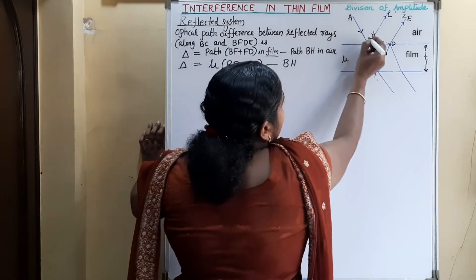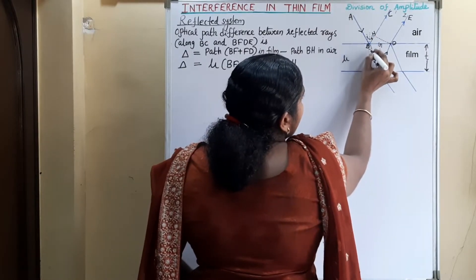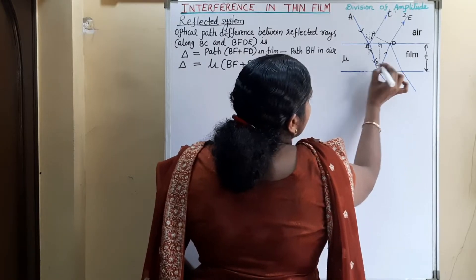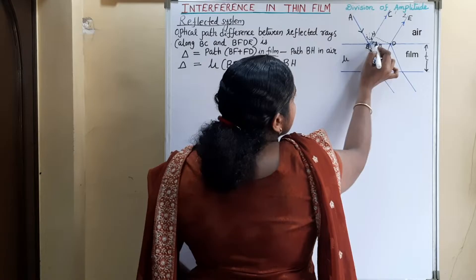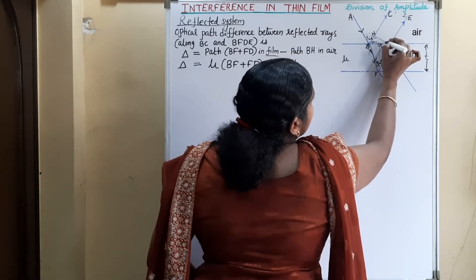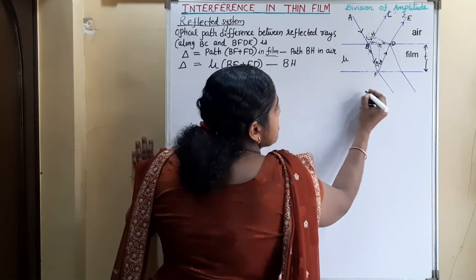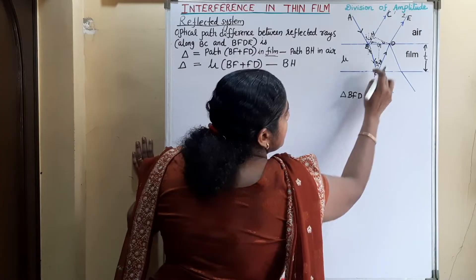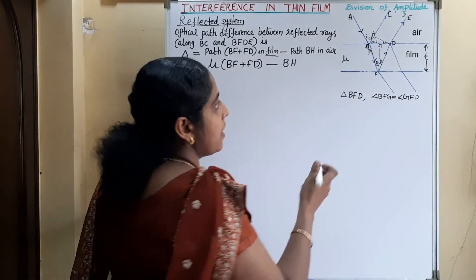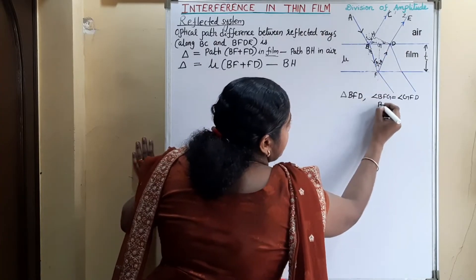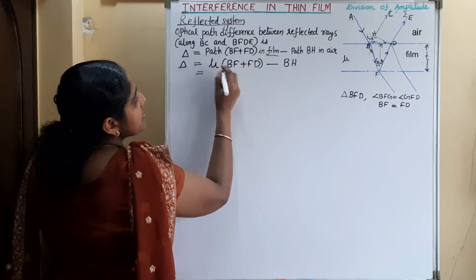Consider all the angles. This is the angle of incidence I. The angle of incidence and angle of reflection are equal, so this angle is also I, and the angle of refraction is R. The reflected ray at point F also makes angle R, so this angle will be 90 minus I. First, consider the distance BF plus FD. In triangle BFD, since angle BFG equals angle GFD, this is a symmetrical triangle. Therefore BF equals FD, so BF plus FD equals 2 times BF. The path difference becomes 2μBF minus BH — call this equation 1.